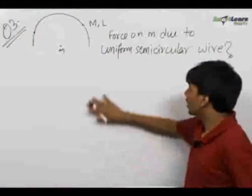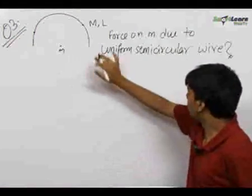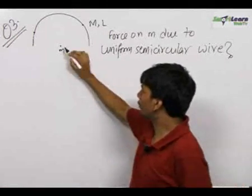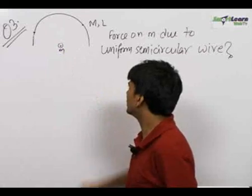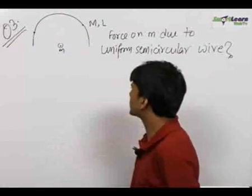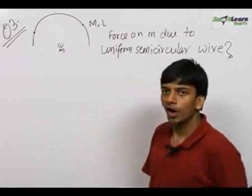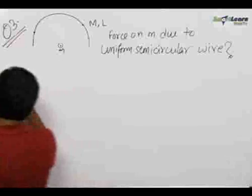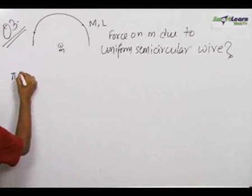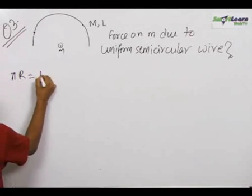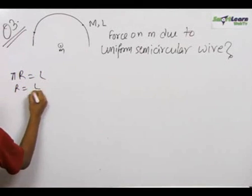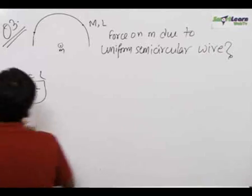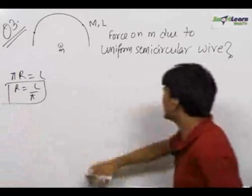In this question, we have a uniform semicircular wire and we need to find out the force acting on a small mass m due to this uniform semicircular wire of mass m and length l. Let us first find out the radius of the wire: π r = l, therefore radius r = l/π. We will use this if needed in the future.